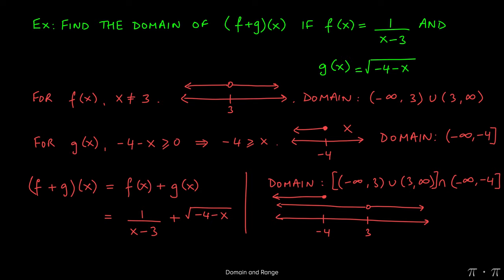Now what we're looking for with intersections, which is this upside down u, is where there's an overlap, and hopefully it's obvious to see that there's an overlap right there from negative infinity to negative 4. So that is our domain for this function, negative infinity to negative 4. And that's it.